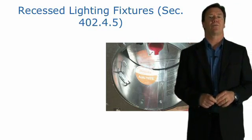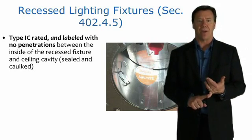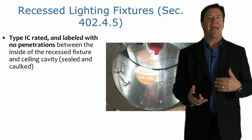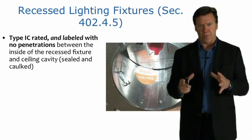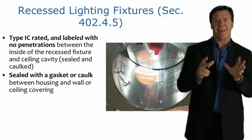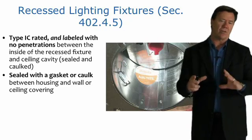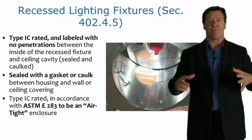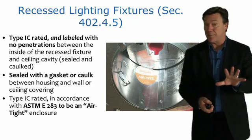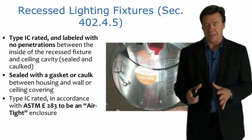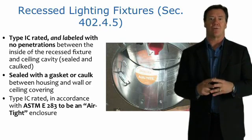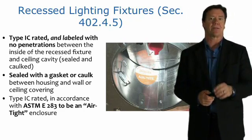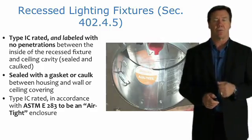Another major energy leaker in homes is can lights. These need to be IC-rated — insulation contact — and labeled with no penetrations between the inside of the recessed fixture and the ceiling cavity, meaning they must be properly sealed. The IC-rated fixture should be tested in accordance with ASTM 283, measuring air infiltration rate of the can itself, with no more than 2 CFM of airflow. We also want to seal where the can light interfaces with the ceiling drywall to stop air infiltration at these locations, which are significant leakers.